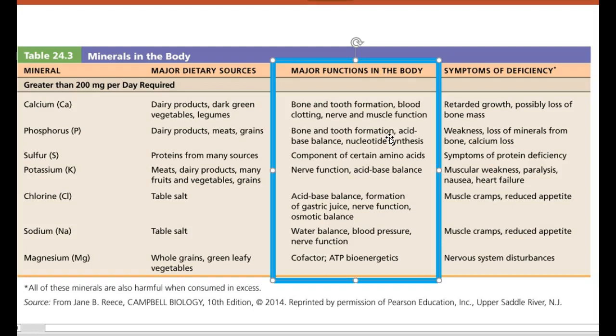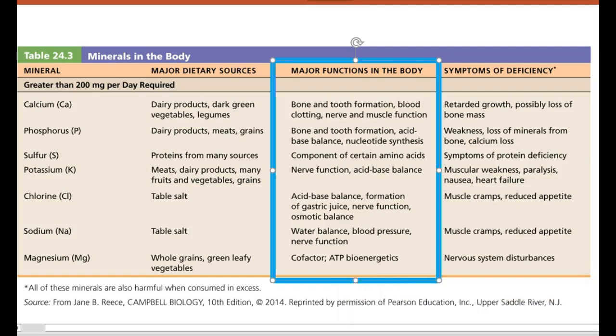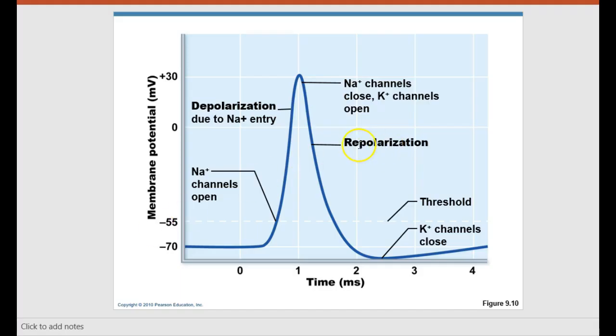Sulfur is important in some amino acids and is particularly important in immunoglobulins — it helps create that base of the Y shape that we see for immunoglobulins. Potassium is super important in terms of generating action potentials; we see potassium leaving the nerve cell during repolarization, and we also saw that in pacemaker cells and contractile cells of the myocardium.